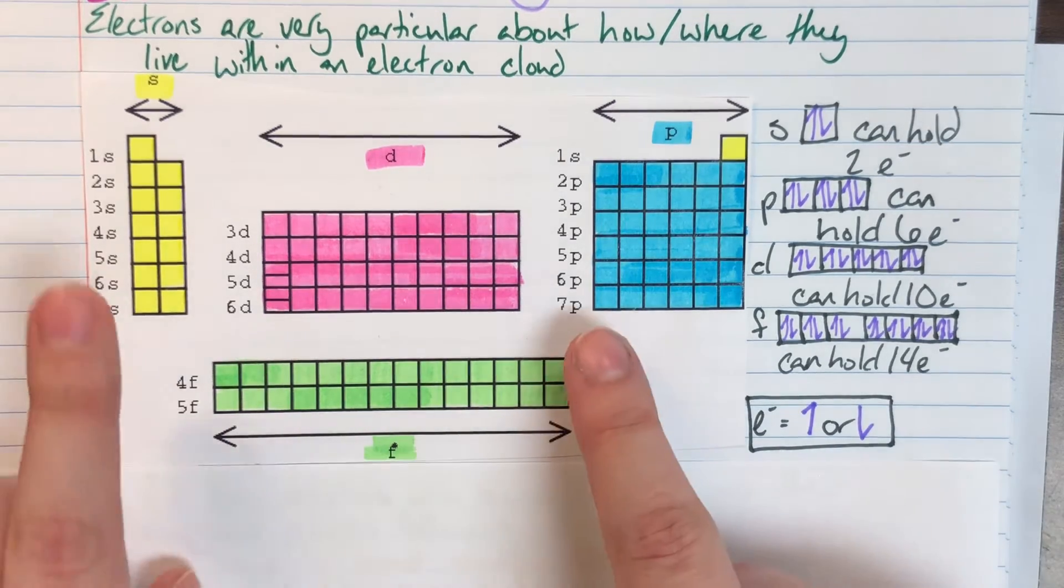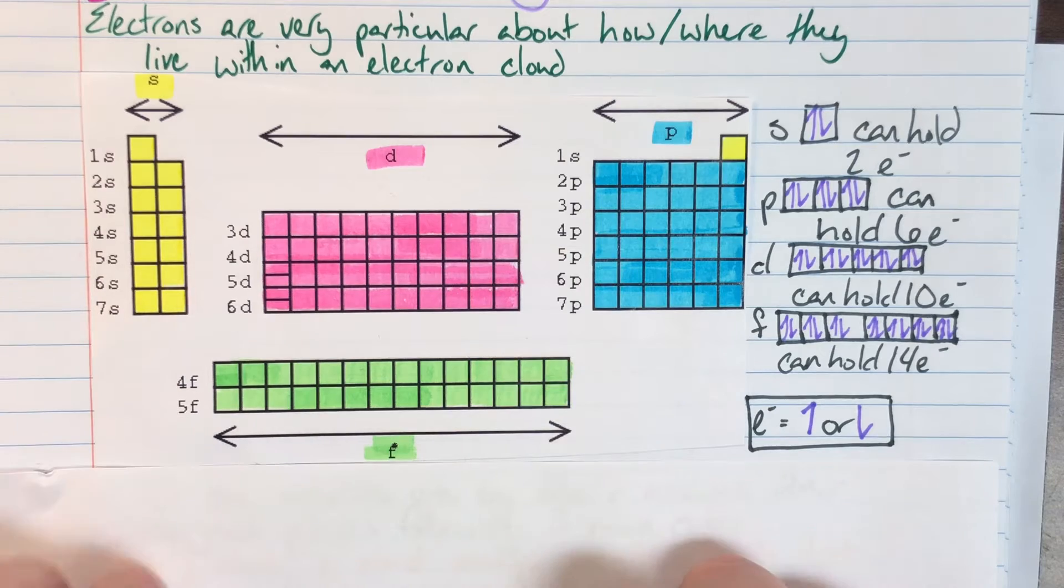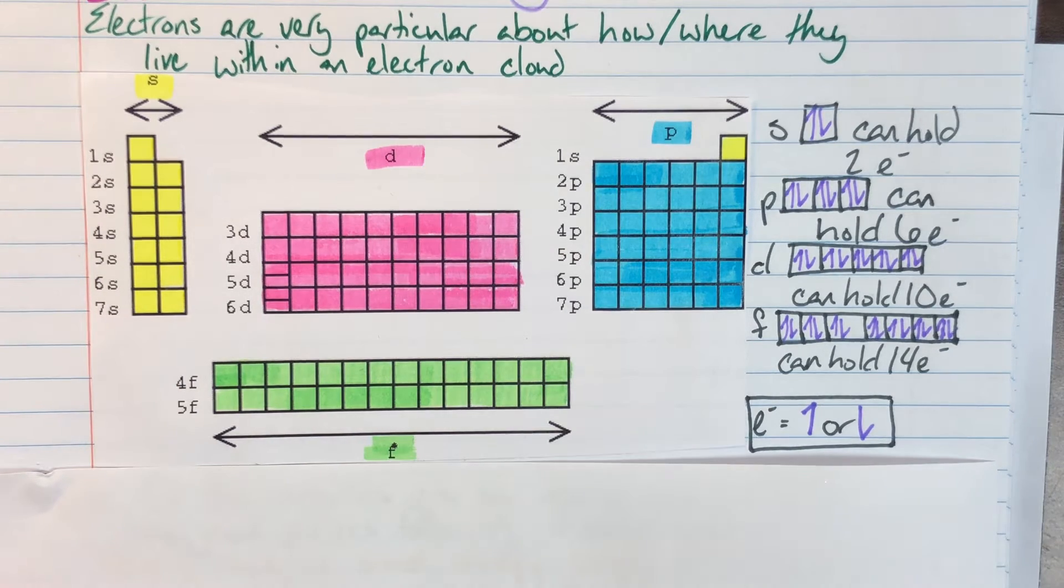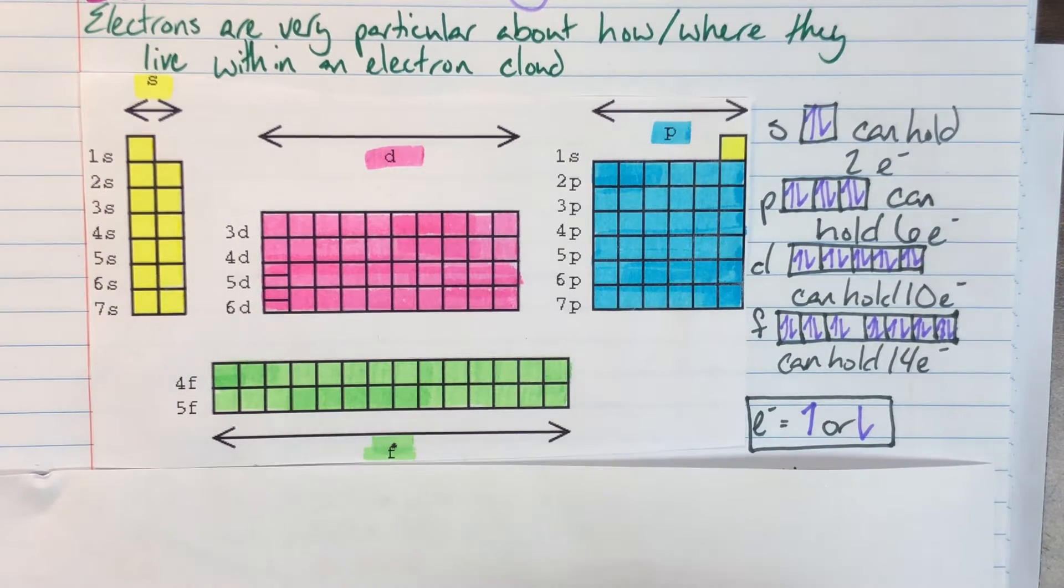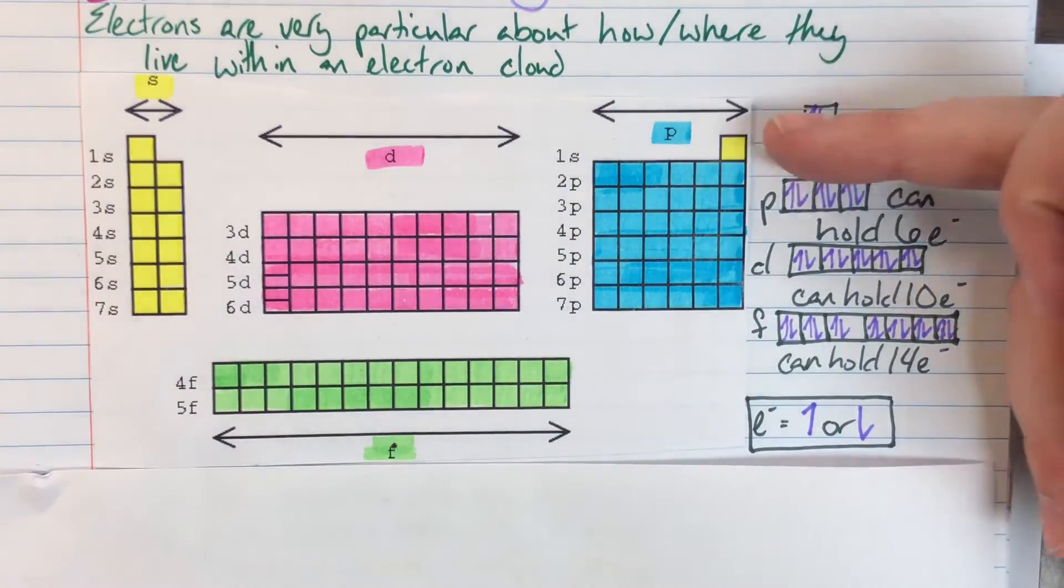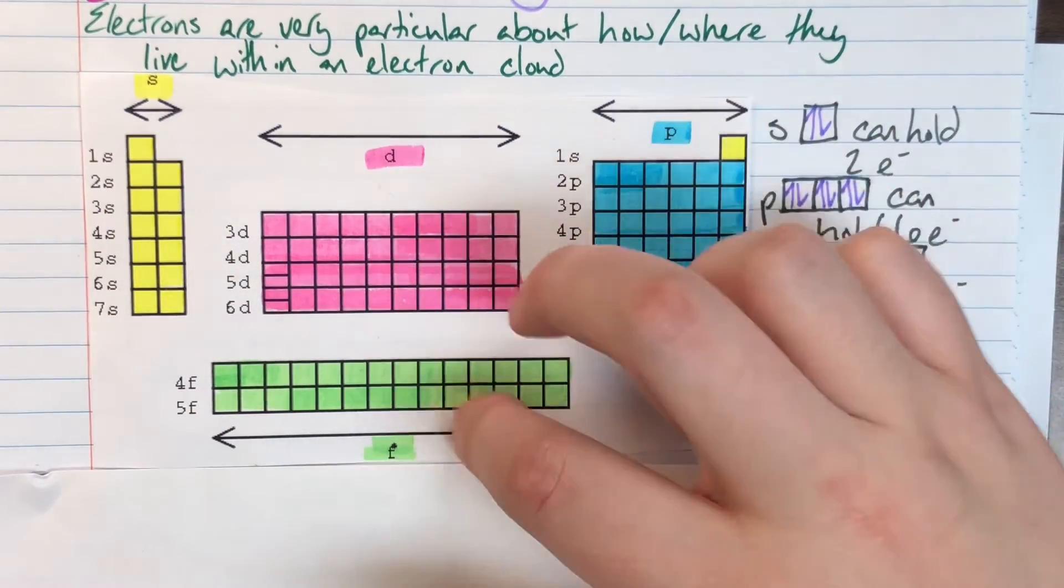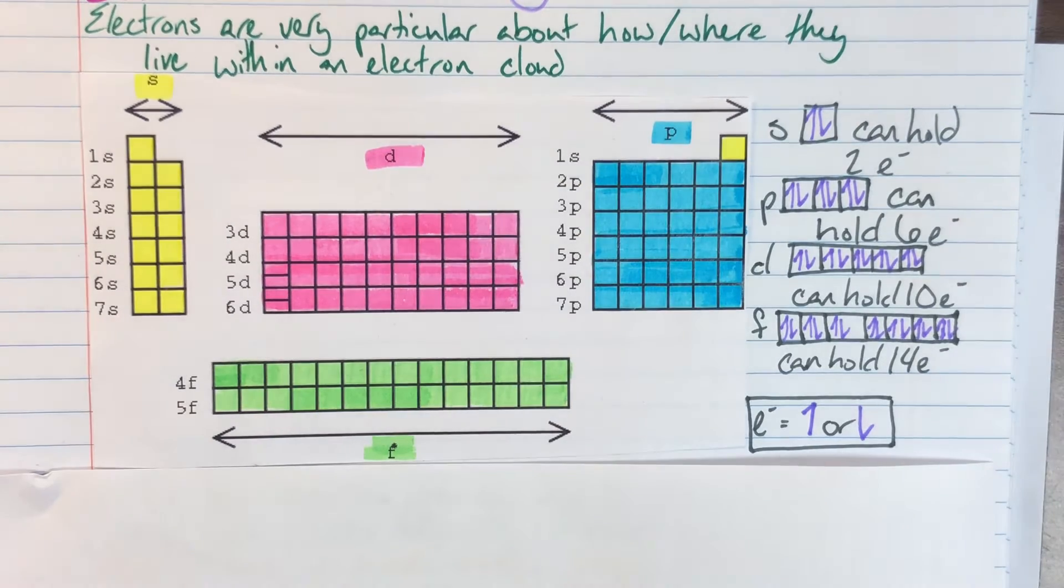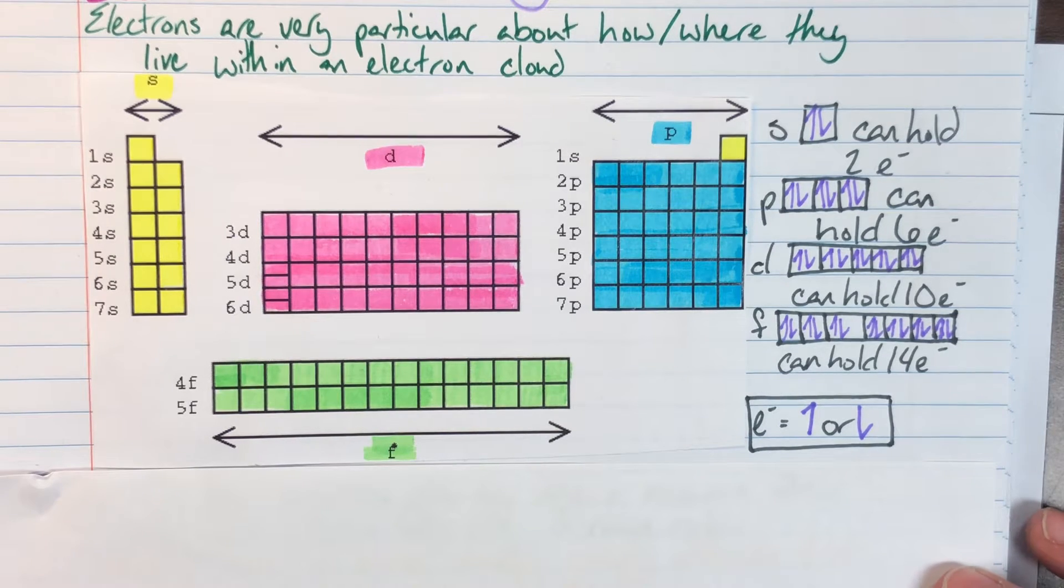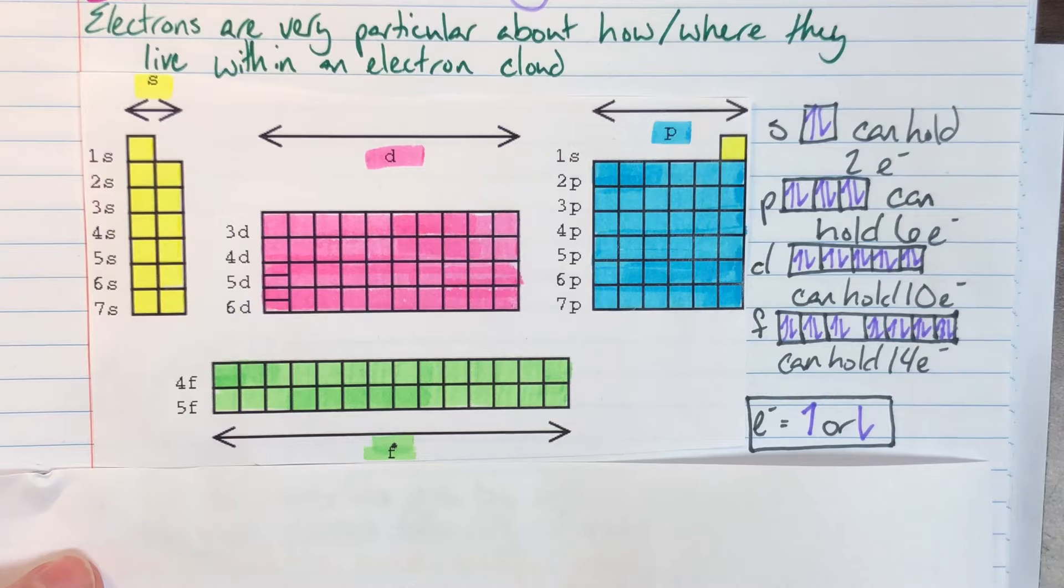Something to note is that the S and the P block are both going to match energy level for the actual row that they're in. So row 1 is going to be 1s and then row 2 is 2s, 2p. My D block and my F blocks are a little bit strange in that they do not follow this general guideline. They are less desirable places to live so they have a lower energy level that they must maintain inside of them so they actually start at lower levels.